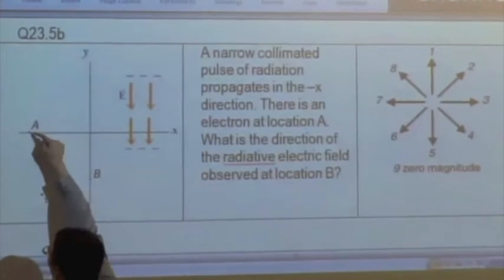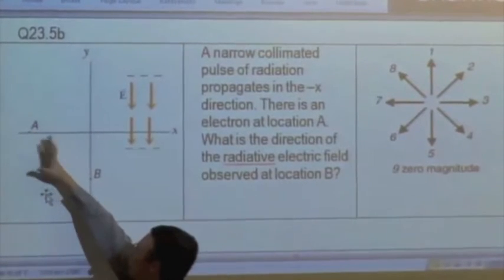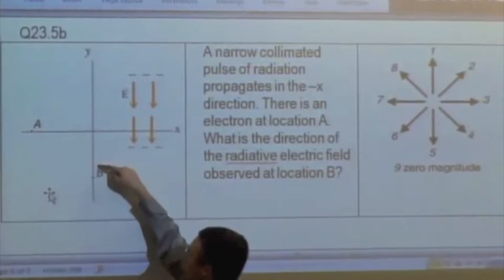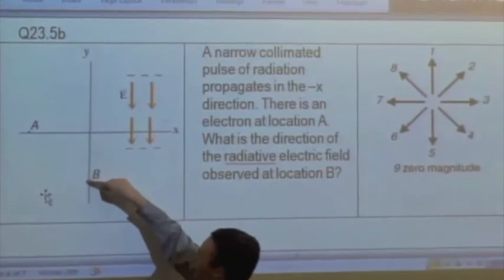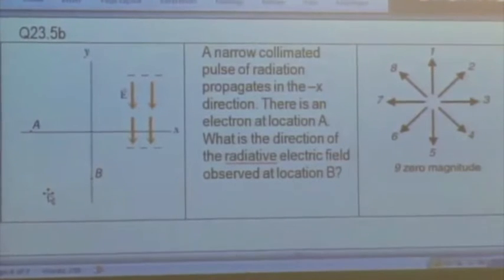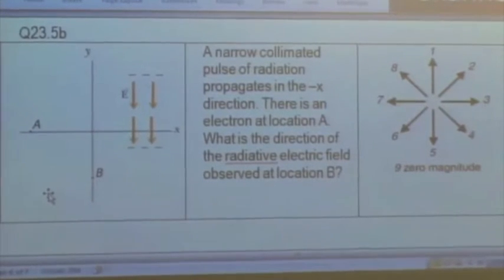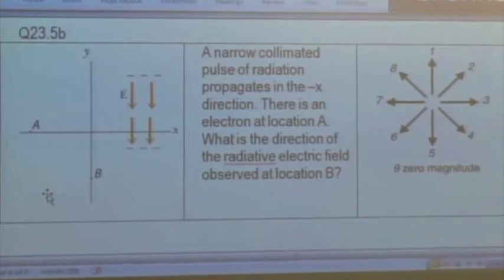So, here's what's going to happen. This pulse is confined only between these dotted lines. This pulse comes in, and it's going to cause this charge to accelerate. But once this charge accelerates, it's going to emit radiation in all directions, including toward location b.